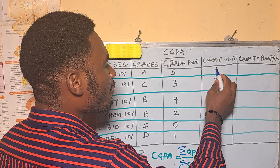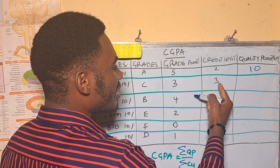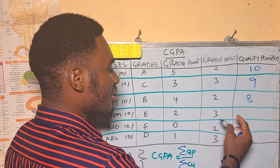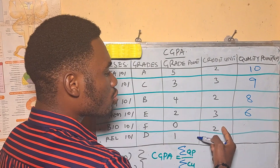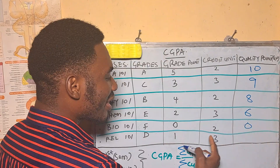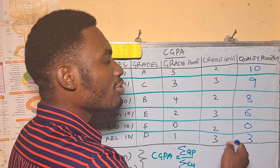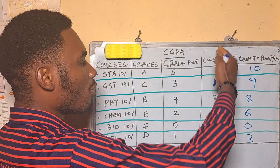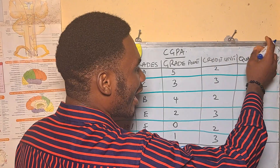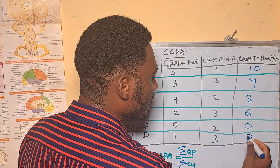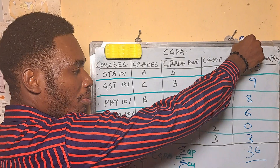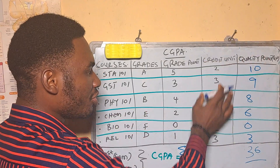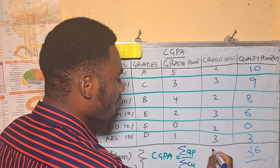Let's solve: 5 × 2 = 10, 3 × 3 = 9, 4 × 2 = 8, 2 × 3 = 6, 0 × 2 = 0, 1 × 3 = 3. We are going to sum all the quality points and also sum all the credit units for the semester. Adding up all the quality points gives us 36 as our total summation.